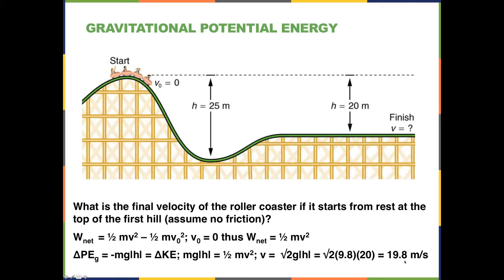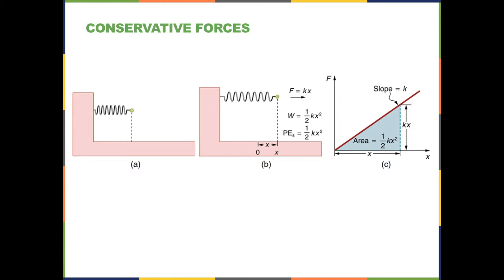There are other forms of energy and forces that can be conserved. Here's an example of elastic energy. When a spring is at rest it has no energy and does no work. When you pull the spring out, it requires a certain force. The resting point is zero, x is the displacement, and k is the spring constant — dependent on the material and coil thickness. The work done to pull it out is W = ½kx², and the elastic potential energy is also PE = ½kx².